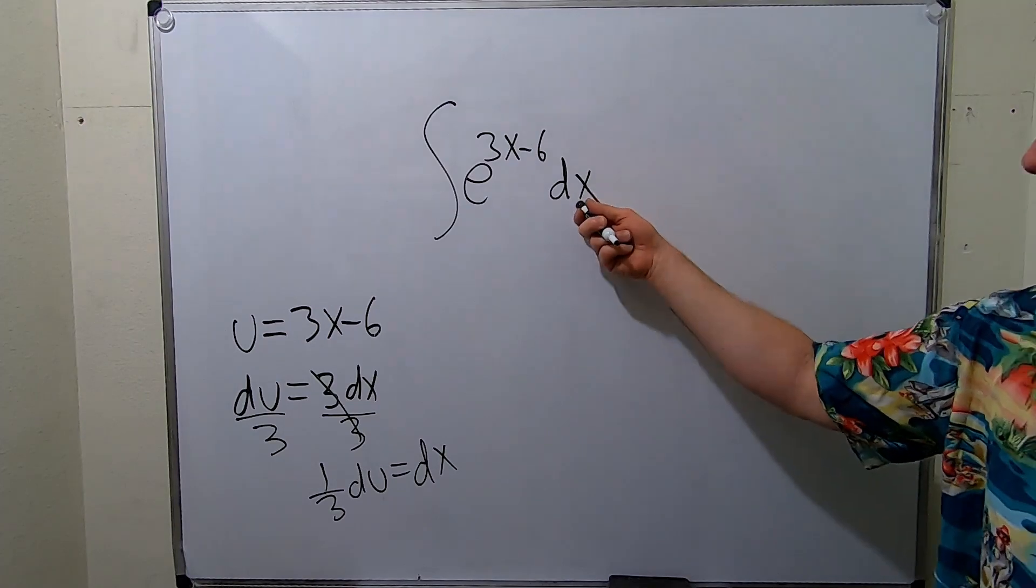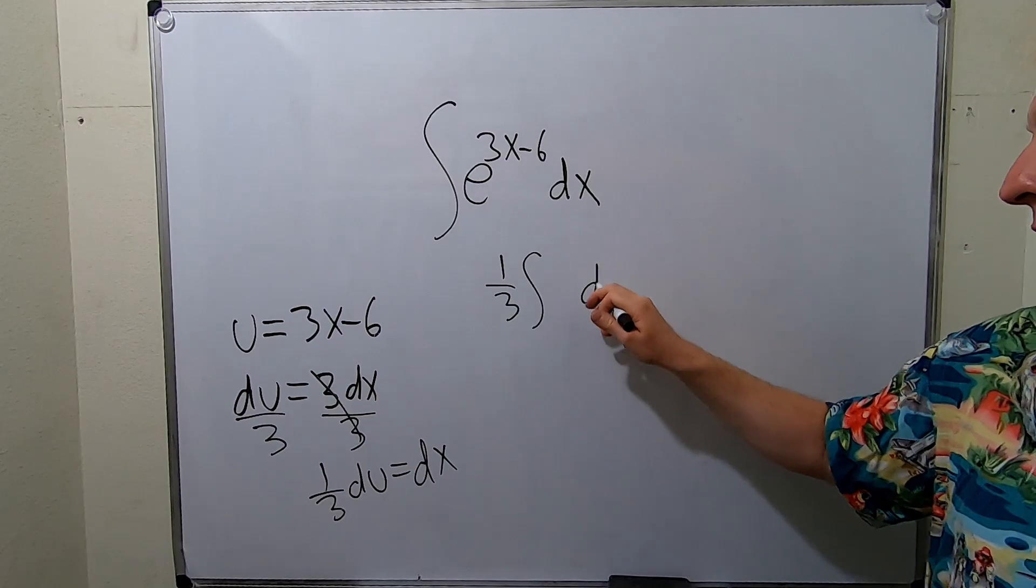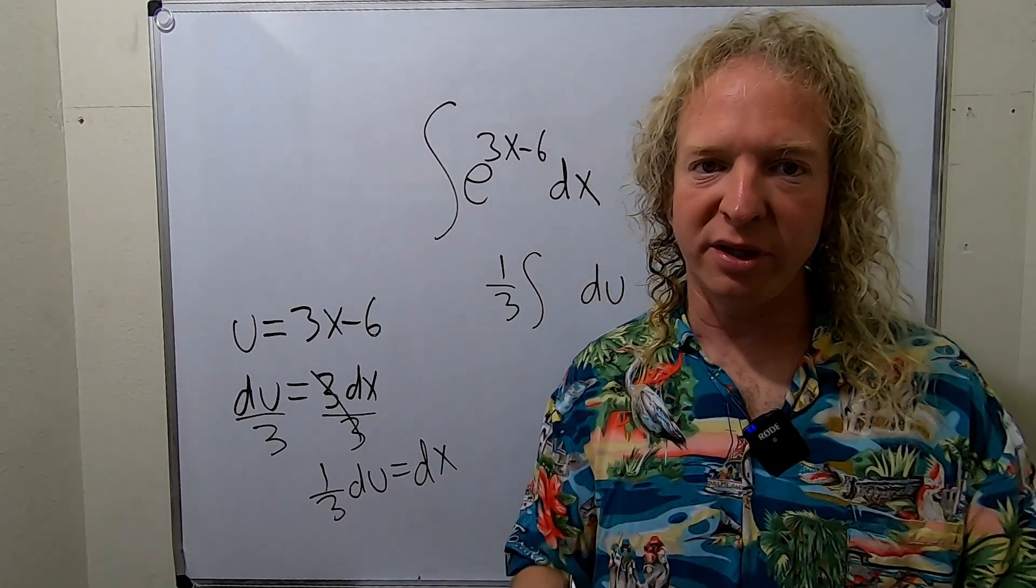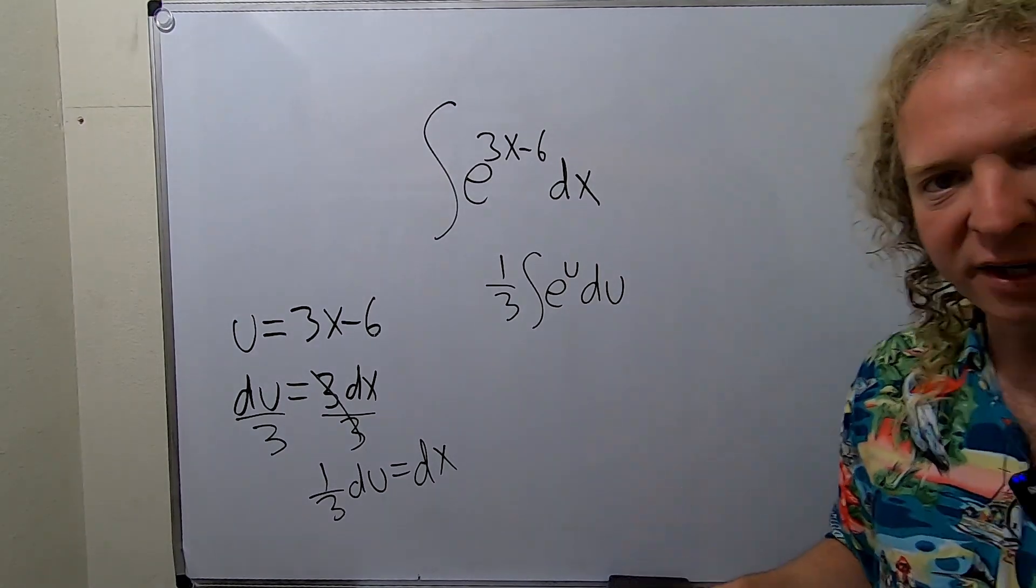So now we replace dx with 1 third du. So this will be 1 third du. And we're simply left with e to the u. Good stuff. So now we can integrate.